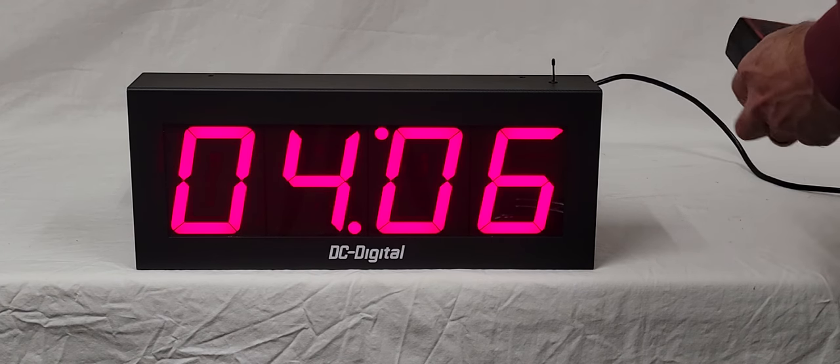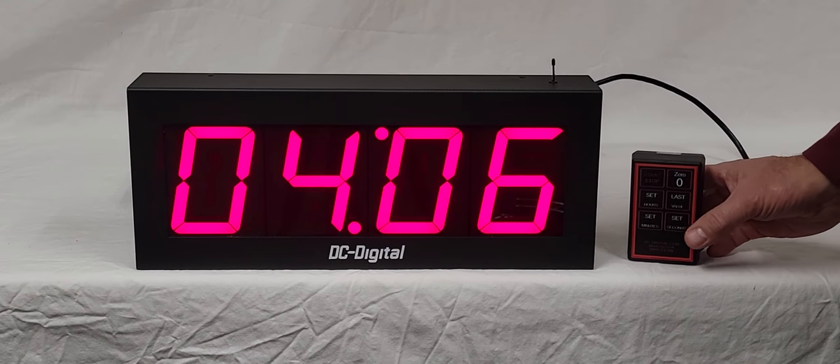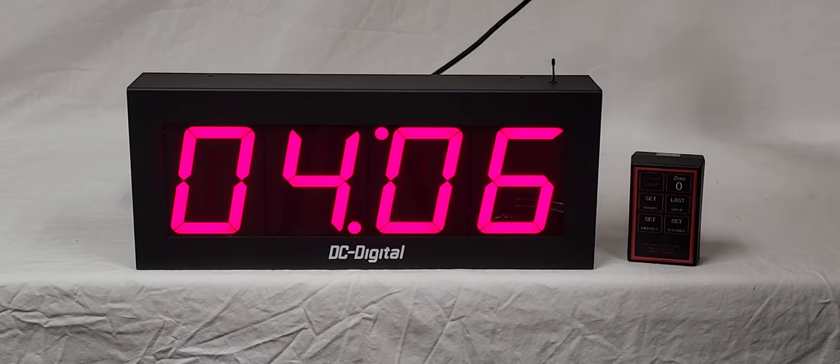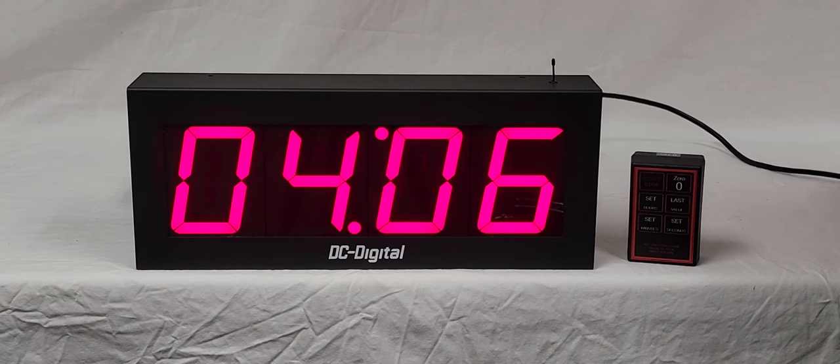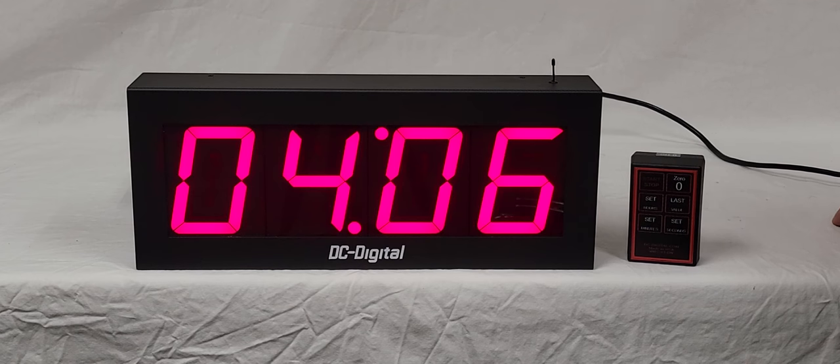The handheld remote has a belt clip and a 9-volt alkaline battery that can be changed. And right now we have it connected via this six-foot cord that we normally put on our push-button type timers, just for demonstrations.